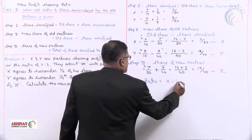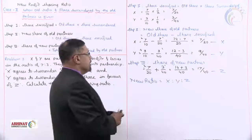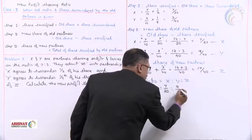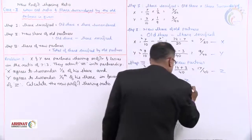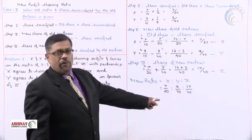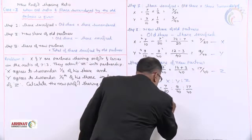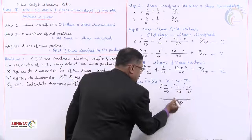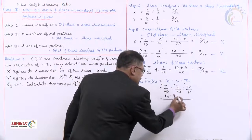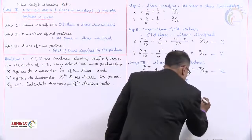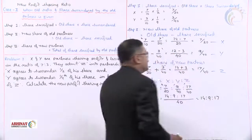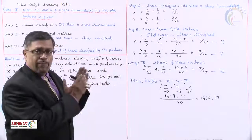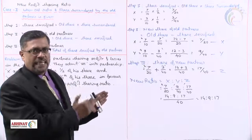New ratio of X : Y : Z. New share of X is 7/20, of Y is 9/40, of Z is 17/40. LCM of 20 and 40 is 40; 40/20 = 2, so 2×7 = 14. The ratio is 14 : 9 : 17. This is how we calculate the new profit sharing ratio under Case 2. Now let us take up one more problem of this type.